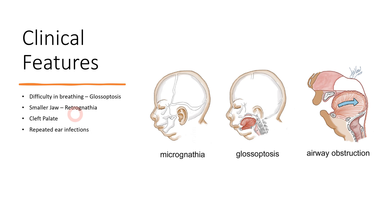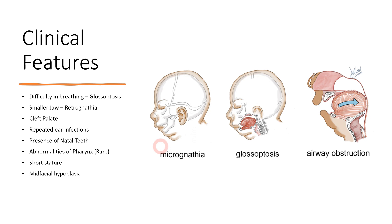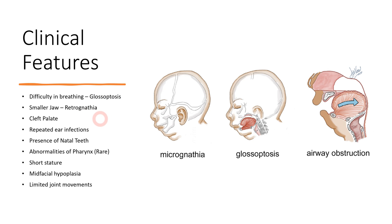Other rare features which may be encountered include repeated ear infections, presence of natal teeth — teeth present at birth, most likely mandibular central incisors — abnormality in the pharynx, short stature, mid-facial hypoplasia, and sometimes limited joint movements. Glossoptosis, retrognathia, and cleft palate are the main characteristic features defining this condition; other features may or may not be present. Clinical features are of utmost importance as they help diagnose such patients.